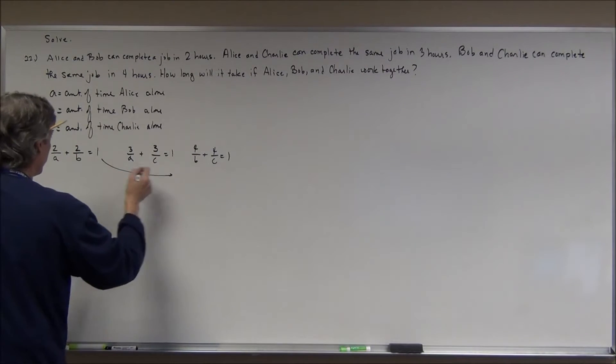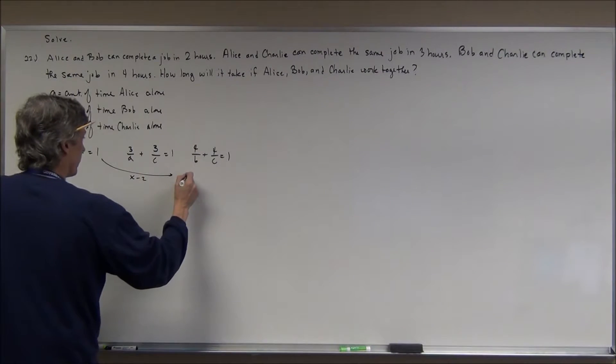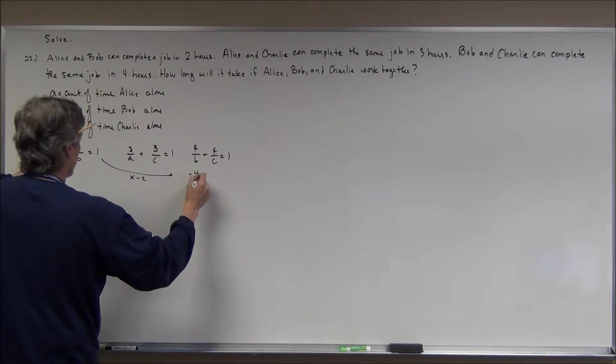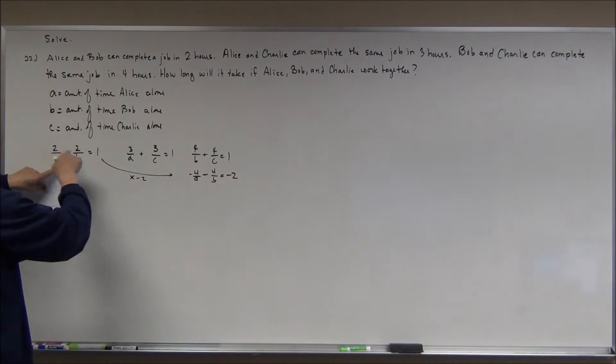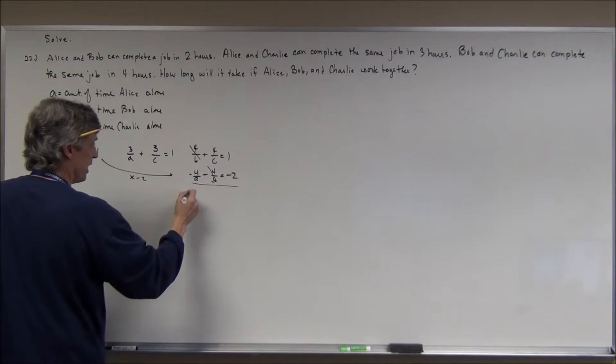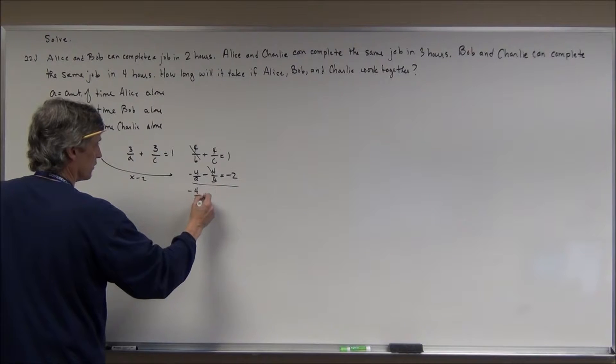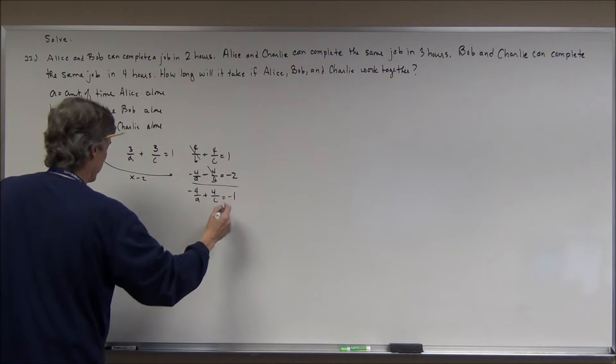If I take this guy right here and if I multiply it by negative 2, all three terms, I get negative 4 over A minus 4 over B equals negative 2. I multiply it by negative 2. These cancel when I add. So, I get negative 4 over A plus 4 over C is equal to 1 and negative 2 is negative 1.